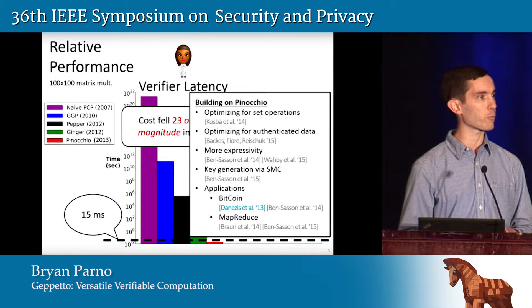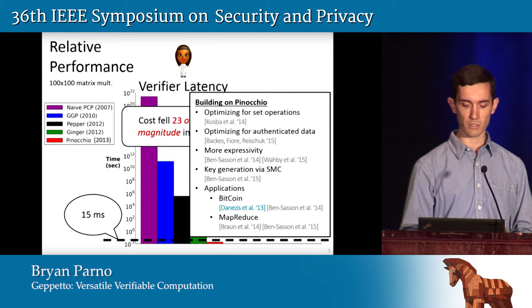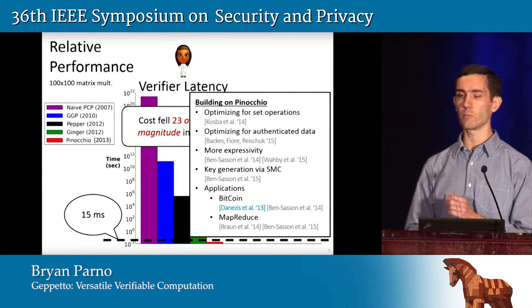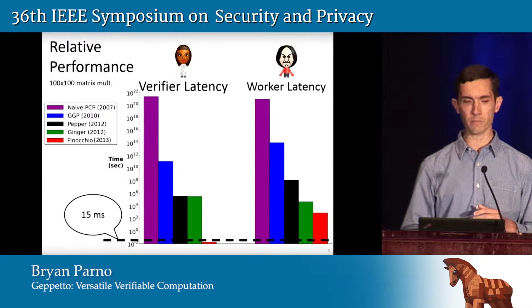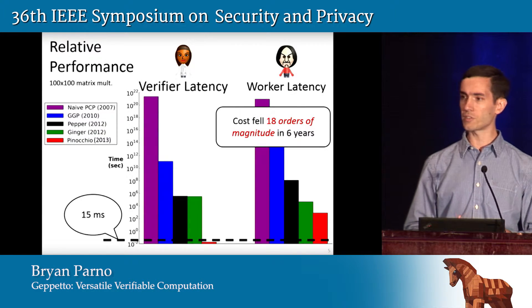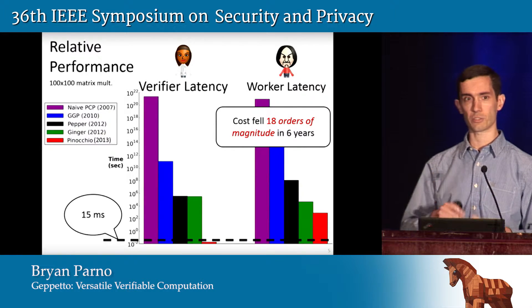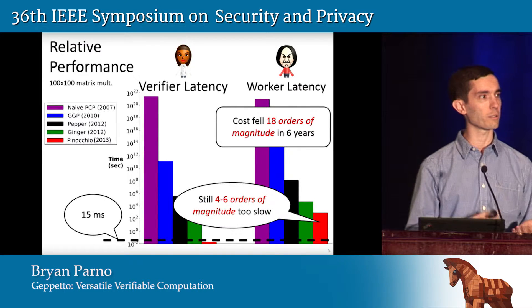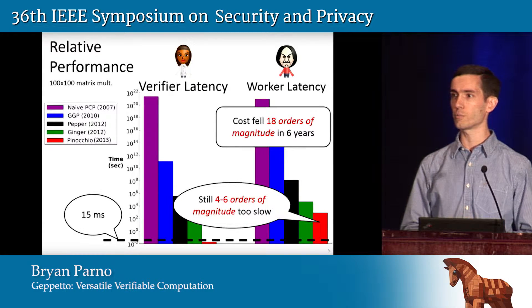Since then there's been a ton of great work in this area: optimizing the Pinocchio protocol for various operations, adding to its expressivity, and using it for various applications including Bitcoin. However, if you look at the worker and how much effort it takes to produce one of these proofs, we've seen a fall of 18 orders of magnitude, which is great — but we're still four to six orders of magnitude slower than the original computation. So you're doing a ton of work to produce this proof way above and beyond what you did to produce the answer.